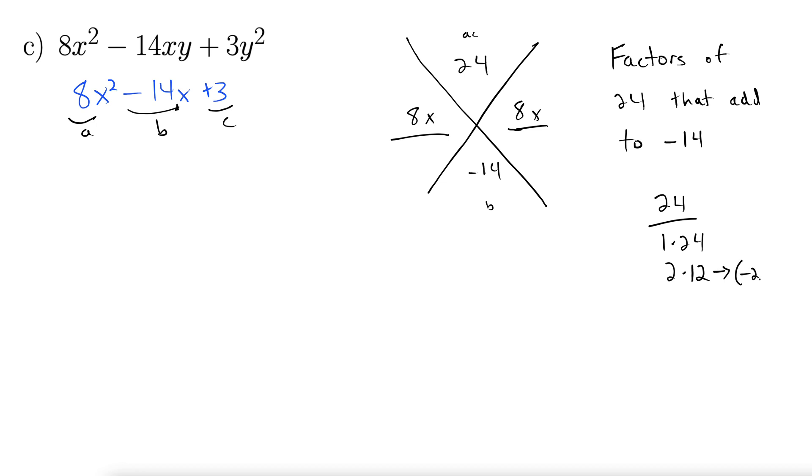Let's do negative 2 times negative 12. How about that? That still multiplies to positive 24. But when you add those, you get negative 14. So we're good to go. Negative 2, negative 12.